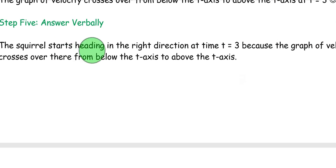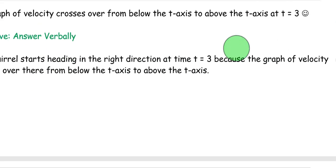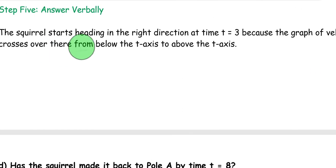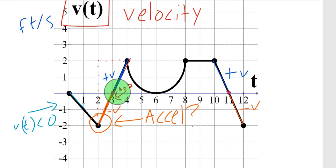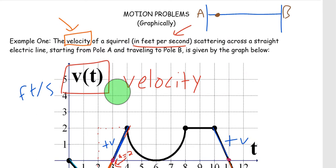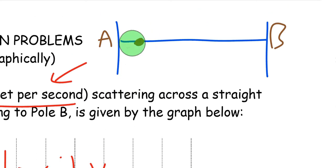Step five, the squirrel starts heading in the right direction at the time t equals three, because the graph of the velocity crosses over there from below the t-axis to above the t-axis. Again, this is when the squirrel starts moving in the right direction. In the case of our illustration, the squirrel initially starts out moving left, and at time t equals three, he starts moving in the right direction, because the velocity goes from negative to positive. That's it for this example of the squirrel changing direction.